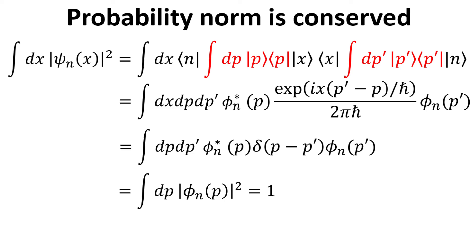Starting with the integrated probability function, we rewrite it in the Dirac bracket notation, then insert two completeness relations with the momenta basis. We replace the xp brackets with their xp transformation relation. Using the definition of the Dirac-Delta function derived earlier, we replace the integral of the exponential phase over x. The Dirac-Delta function allows us to get rid of one of the integrals, and we end up with the integrated probability function over momentum, which has to be one. This all makes sense since in a closed system the electron cannot escape, and the norm has to be conserved.